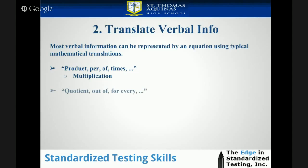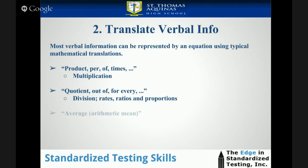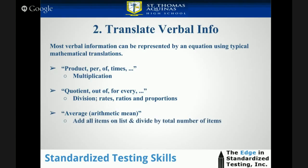'Quotient,' 'out of,' 'for every' really means division, and implies the usage of rates, ratios, and proportions. 'Average,' or arithmetic mean, means add up all the items on the list and divide by the total number of items.